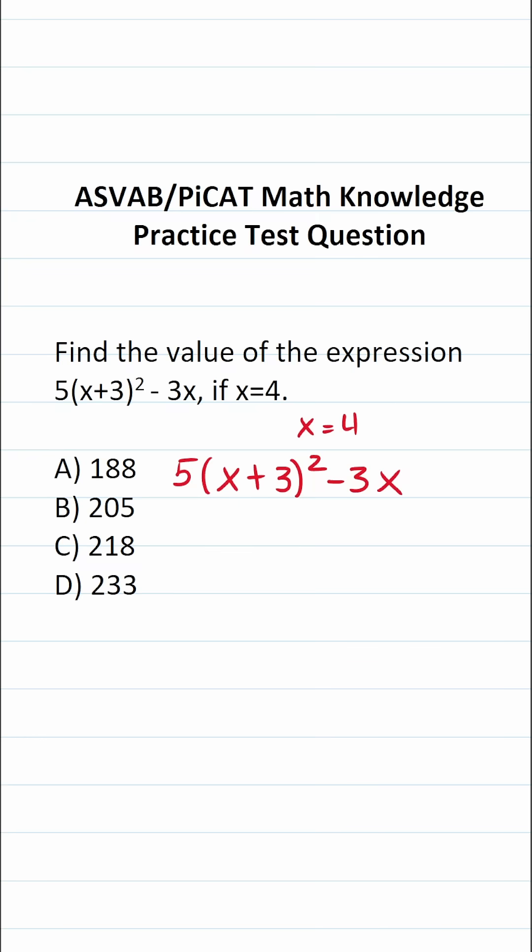So the first thing we have to do in order to evaluate this expression is plug in 4 wherever we see x. So this becomes 5 times 4 plus 3 squared minus 3 times 4.